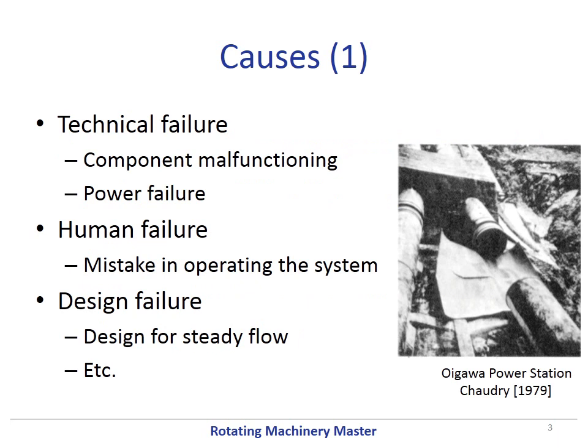The causes of water hammer can be classified according to the type of failure. We can find technical failures, human failures, and design failures. Technical failures can appear because of component malfunctioning or power failure. The typical human failure consists of a mistake in operating the system. Inside design failures, we can find that the piping system was designed for a steady flow.